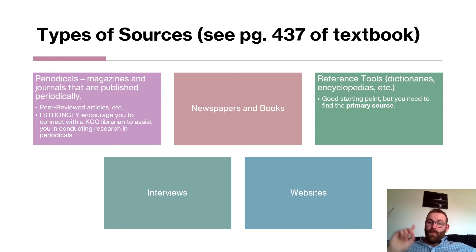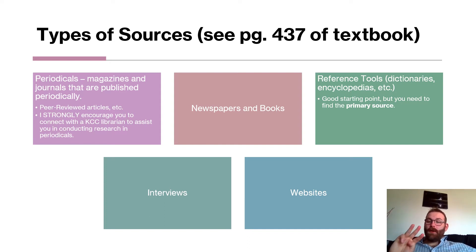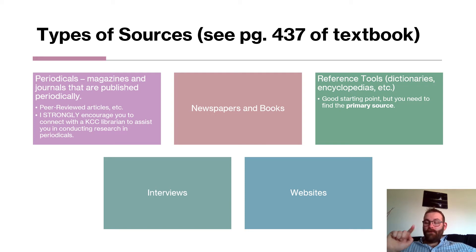Interviews are another source type. You can interview as many people as you want — for example, if you're giving a speech on Habitat for Humanity and you know someone who works there, interview them and include it in your speech. However, only one interview is going to count towards your three required sources. So if you incorporate three interviews, you've only met one of the three required sources. You can use as many interviews as you want, but only one counts toward the three required.